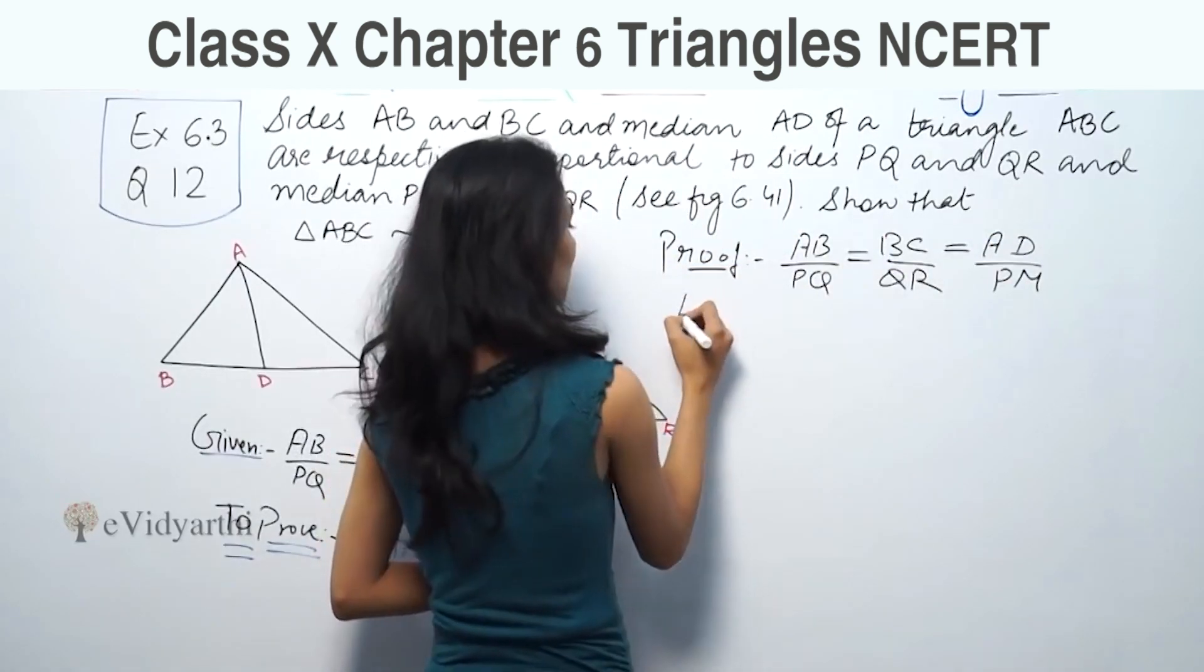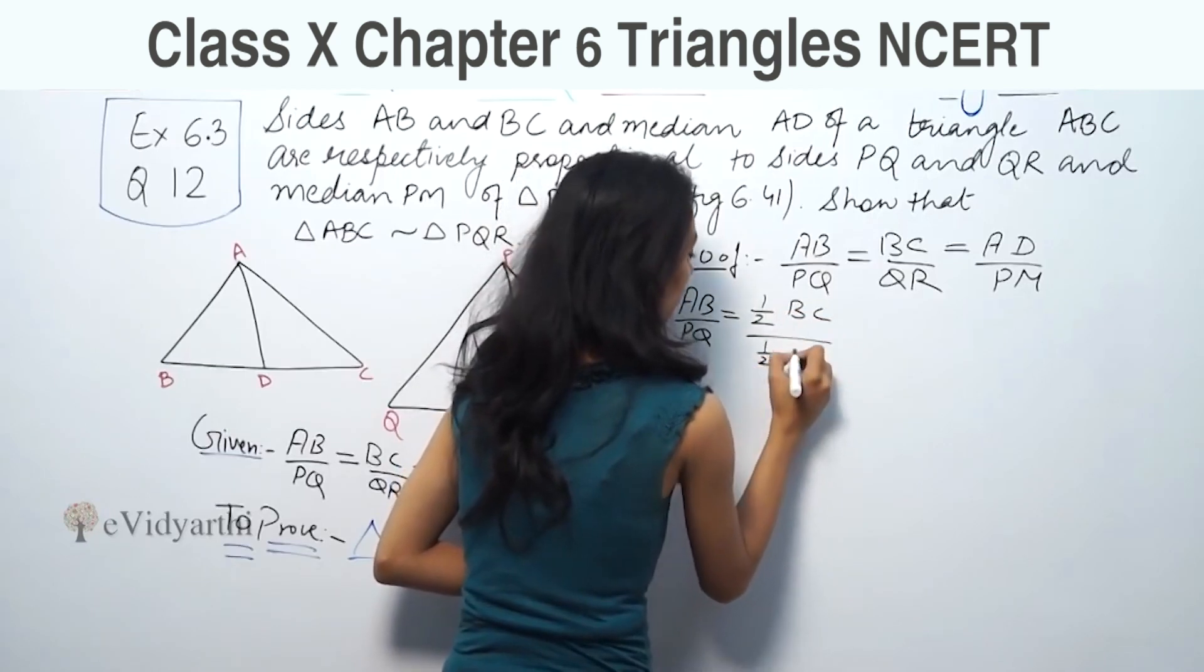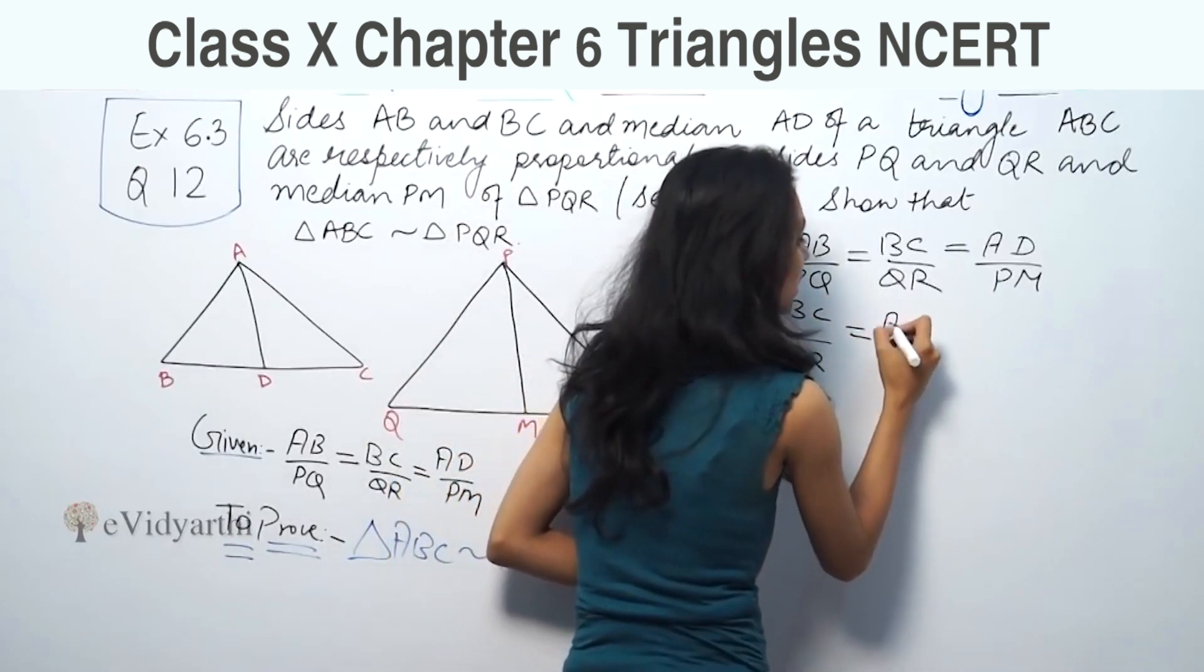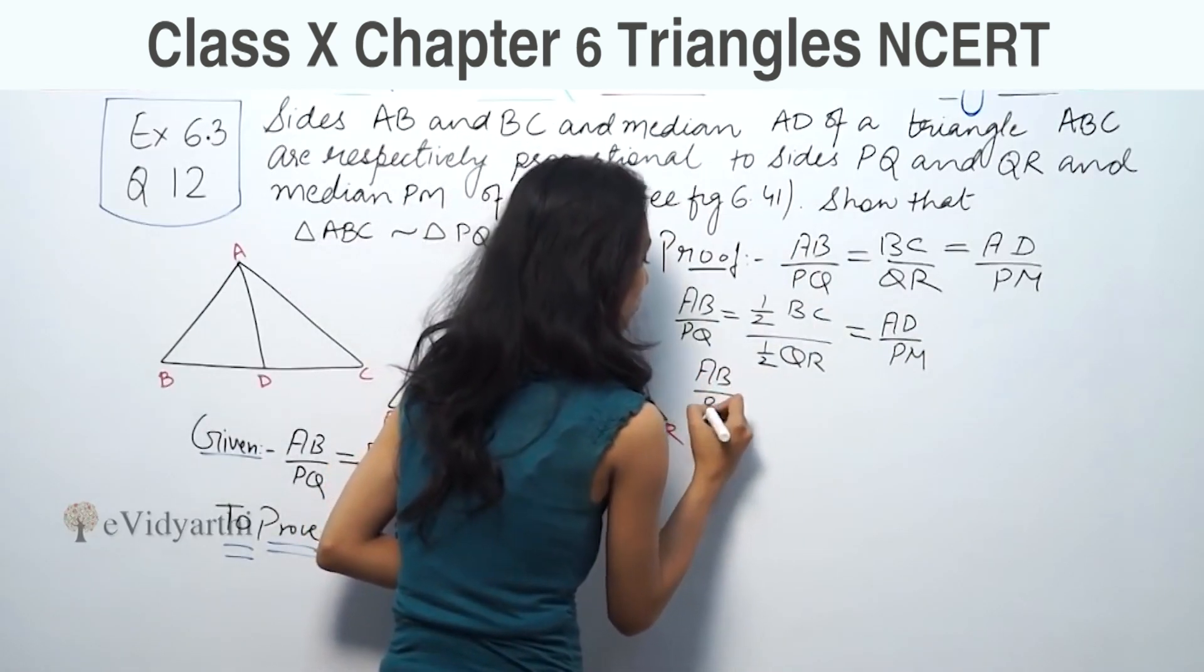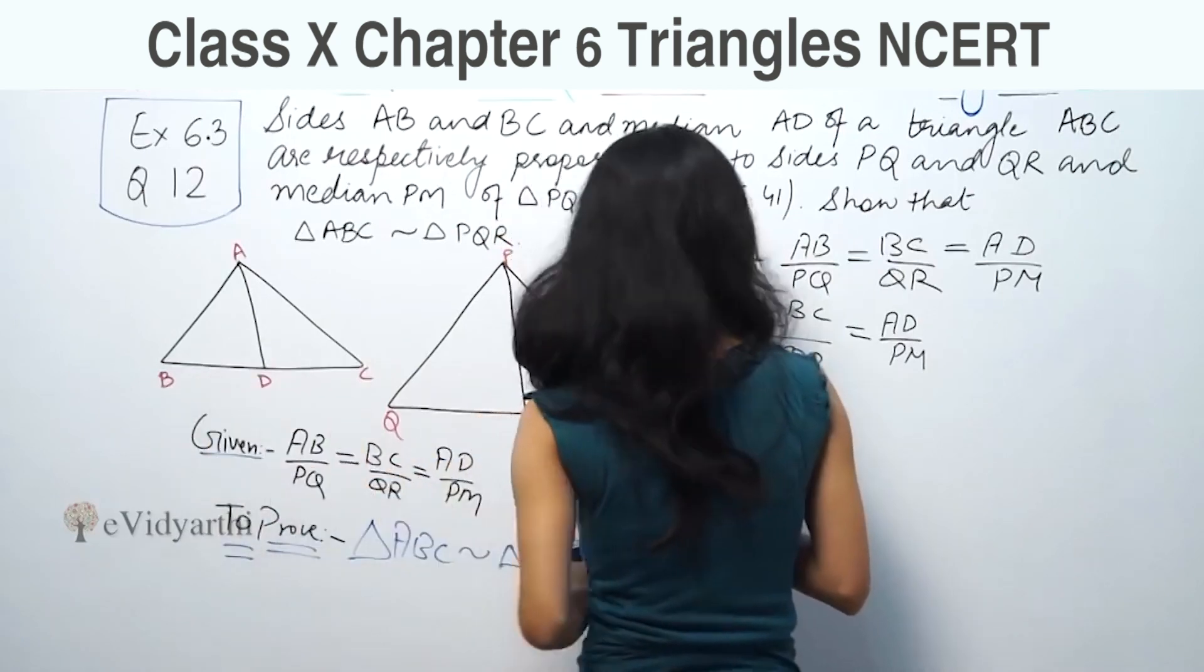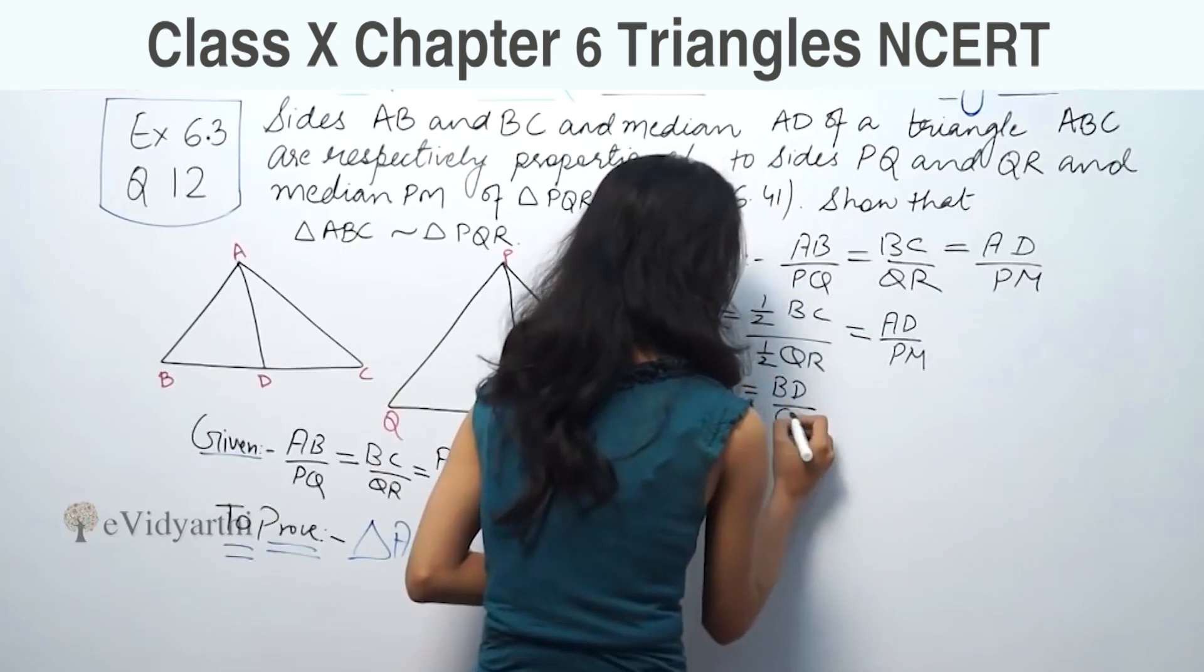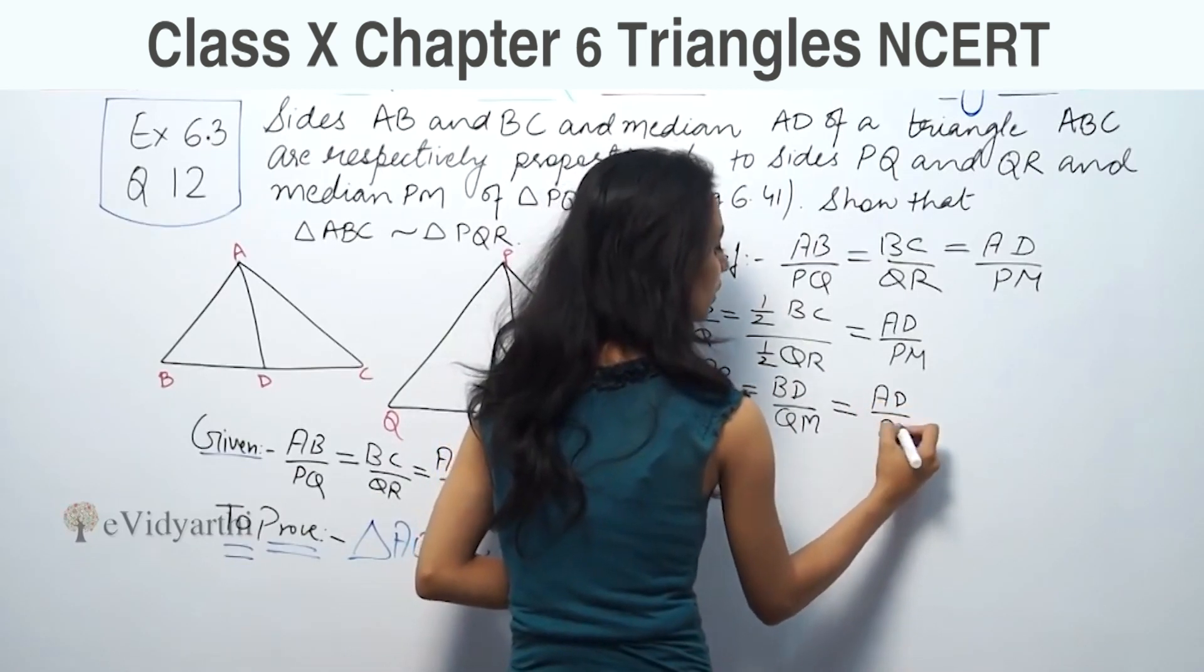So AB by PQ is equal to half of BC upon half of QR. Since BD or DC is half of BC, and QM or MR is half of QR, we have AB upon PQ equal to BD upon QM.